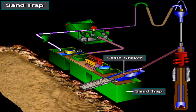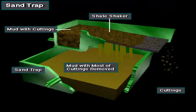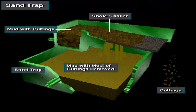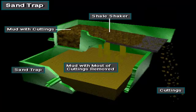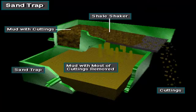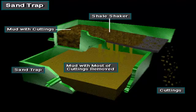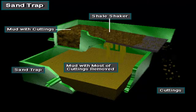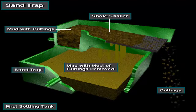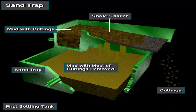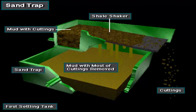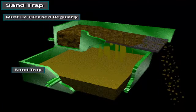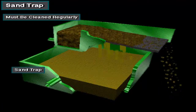The sand trap is the tank directly below the shale shaker. The shale shaker removes most of the cuttings from the mud, but some are so small the shaker cannot trap them — these fall into the sand trap. The sand trap is the first settling tank, and crew members have to clean it regularly to remove the built-up solids.